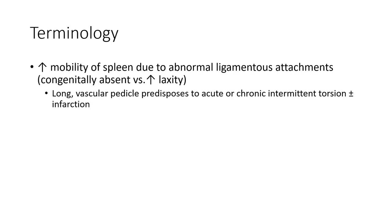Wandering spleen is an increased mobility of the spleen due to abnormal ligamentous attachment, which may be congenitally absent or lax, resulting in increased laxity. The long vascular pedicle predisposes to acute or chronic intermittent torsion and/or infarction.